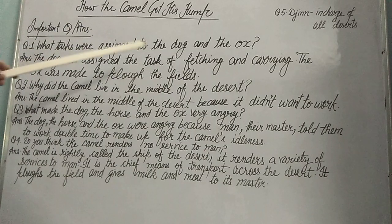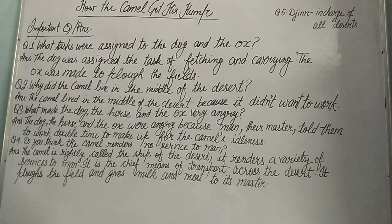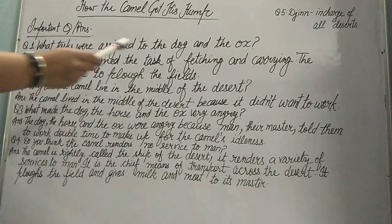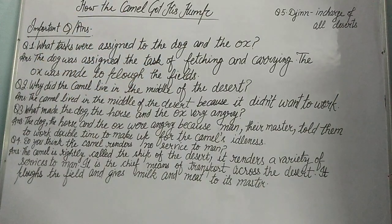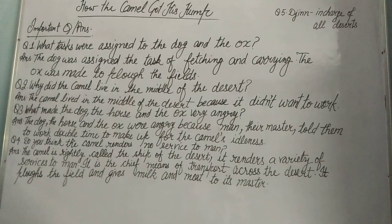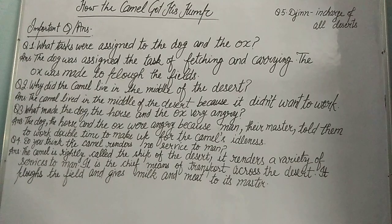The dog was assigned the task of fetching and carrying. Fetching ka matlab lekar ana — kisi duri se lekar ana — aur carrying matlab uthaa lana. Fetch aur bring mein difference hai: bring ka matlab lana, fetch ka matlab door se lekar ana. The ox was made to plow the fields — yani joh bail hota hai, uska kaam hal jotna tha.